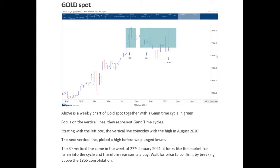The previous two cycles picked the high in August 2020, and the second one picked the high just before the final sell-off into the lows. So as it stands at the moment, it looks as though some sort of low is forming. What is interesting is from an Elliott Wave point of view, this whole correction looks corrective in nature.